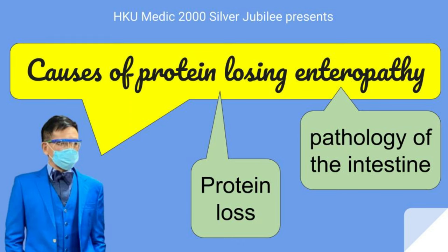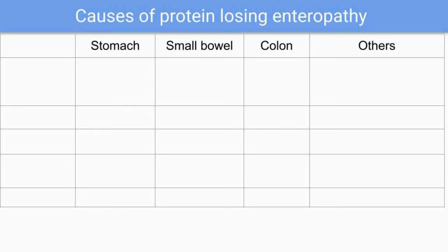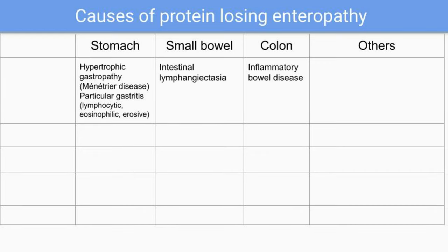The importance of Professor Lai's tutorial is that he teaches the thinking process. He first asks along the intestine: stomach, small bowel, colon, and others. Stomach causes include hypertrophic gastropathy and some particular gastritis.